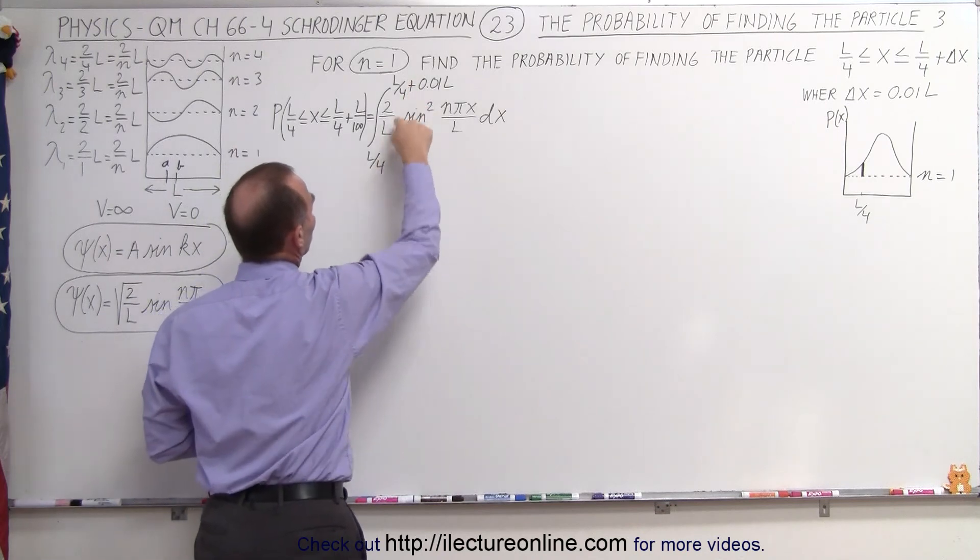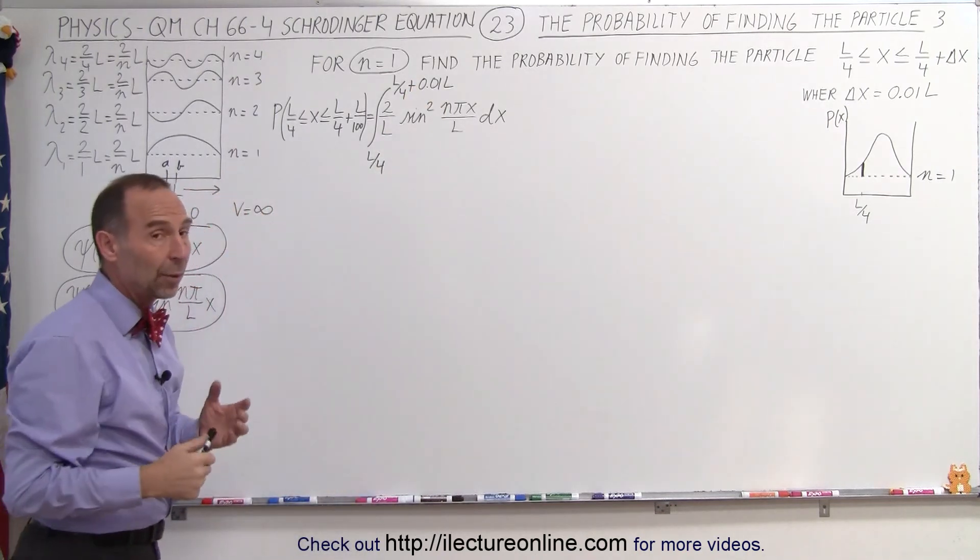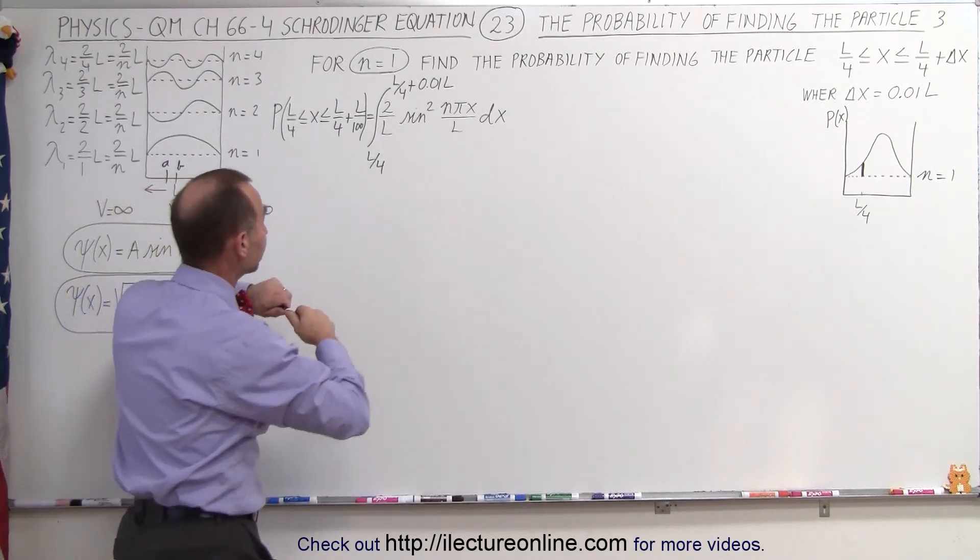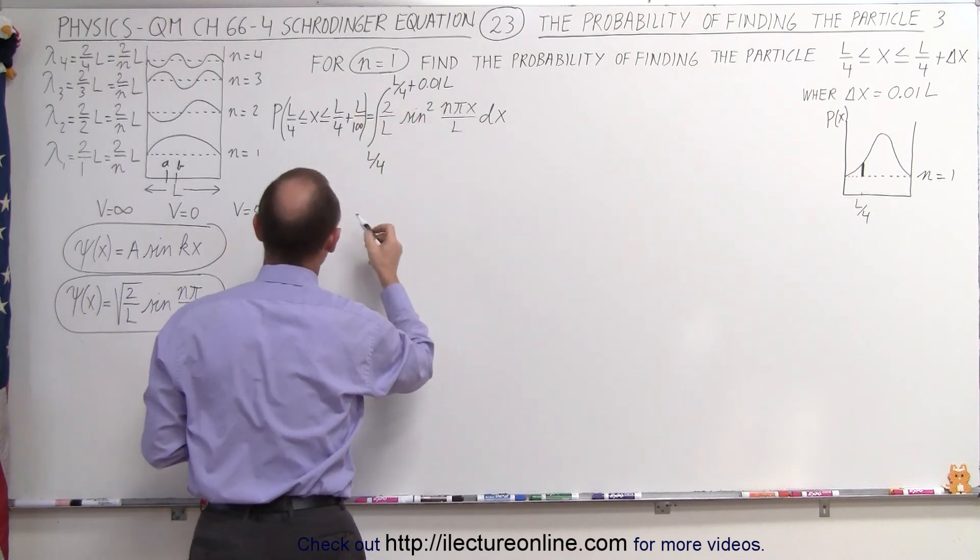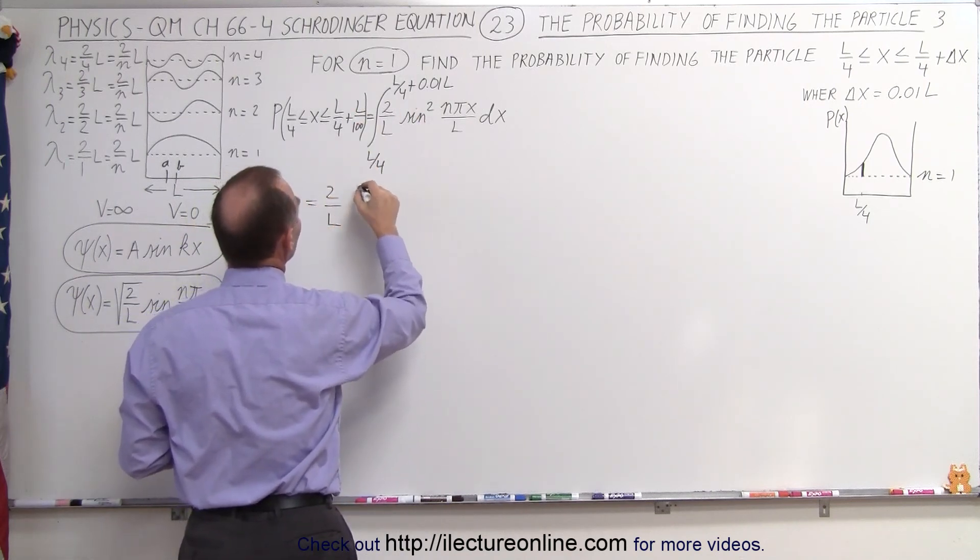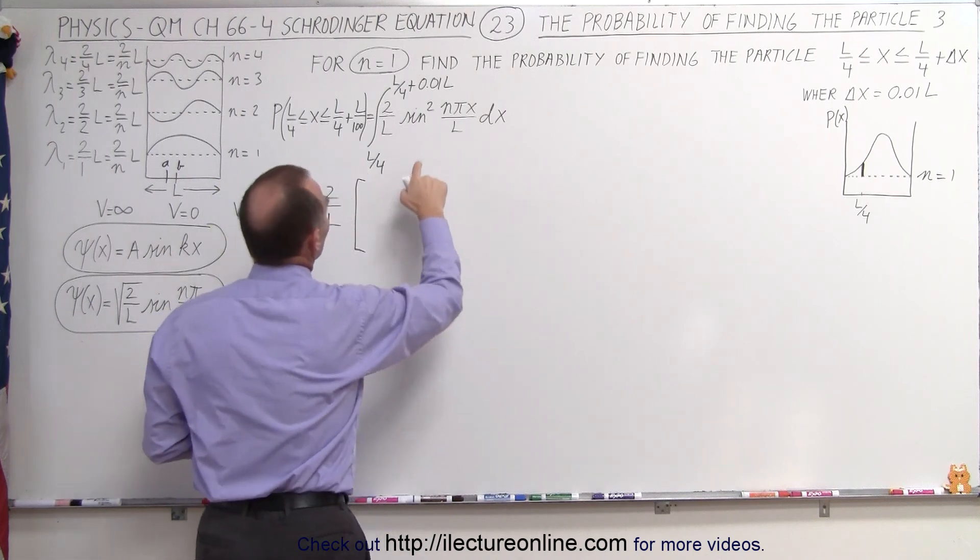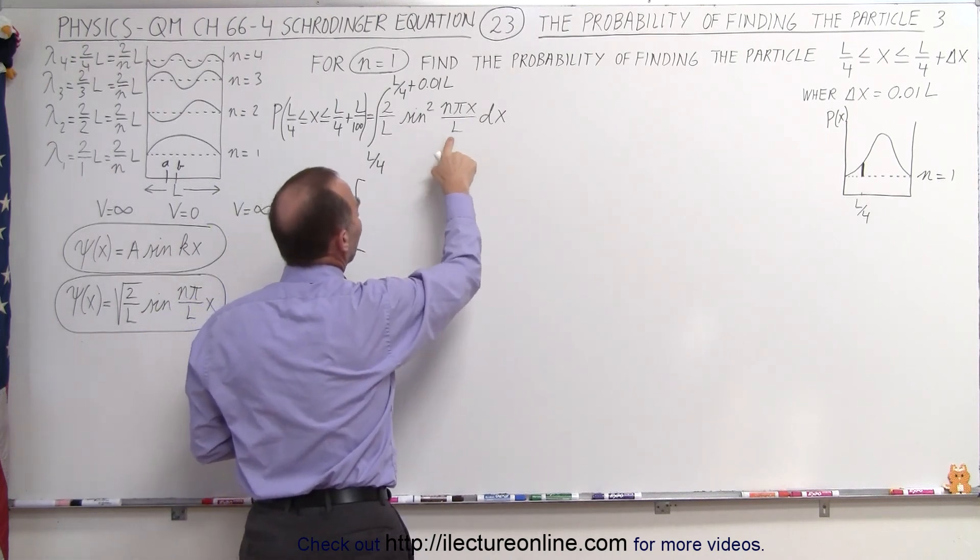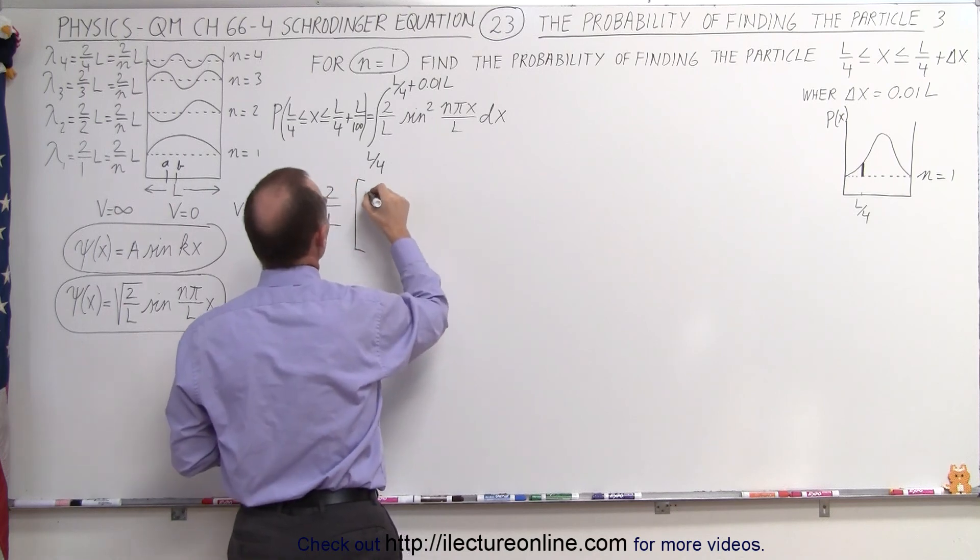Our limits are now going to change to that. When we calculate that, we get the following. We can pull the 2 over L out, so this is equal to 2 divided by L times, since we have the sine squared of an angle, we can find a trigonometric identity for that.